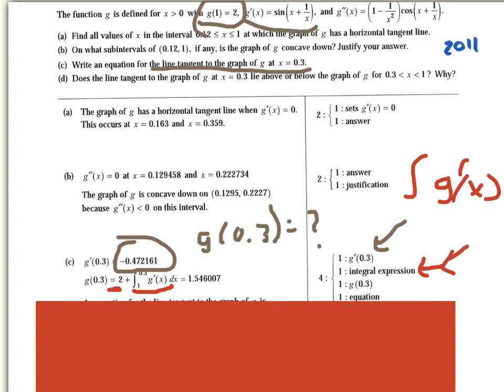Now what do you really have to do? You either have to take this 2 and add it from 1 to 0.3 because you're moving backwards in time, or if you took a 2 minus 0.3 to 1, that's an integral of g prime. So you could have done that too. So this is an acceptable answer. This is an acceptable answer. But the bottom line is, to get g(0.3), the answer is 1.546.